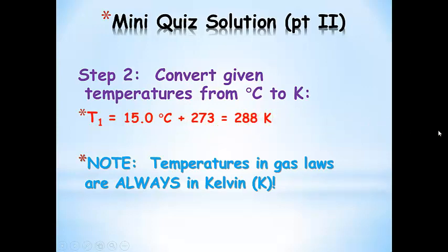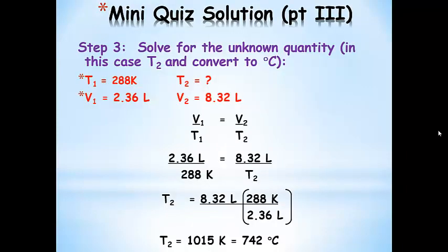Now we plug everything in using our Kelvin temperature of 288 K. Solving for T2, the final temperature, we get 1015 Kelvin. Converting back to degrees Celsius by subtracting 273, we end up with 742 degrees Celsius.